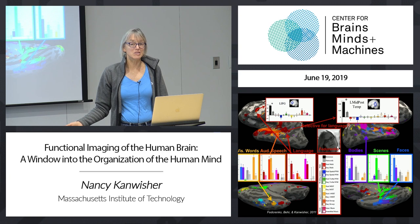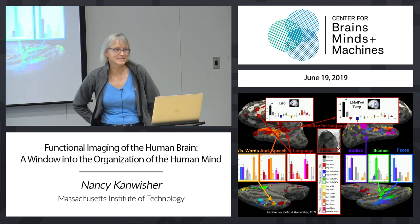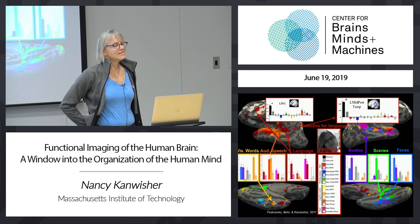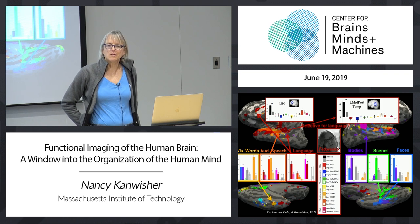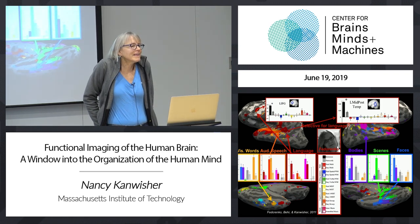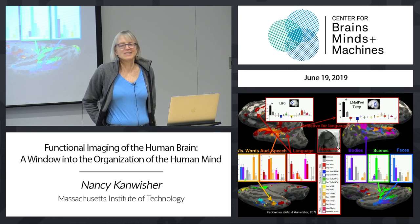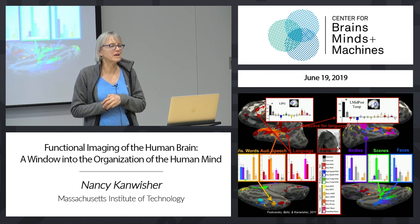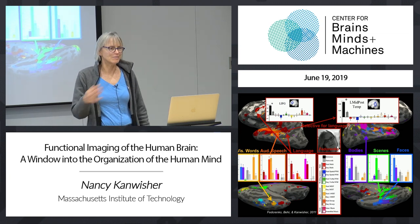These data say that these language regions are really pretty specific for language per se. What makes these blobs particularly interesting is that they answer a question all of you have probably wondered about: what is the relationship between language and thought? These data say that as far as the brain is concerned, the parts involved in understanding language are just completely different from the parts involved in all other kinds of thought — all the ones we've tested so far.